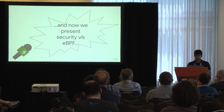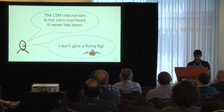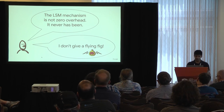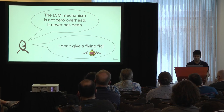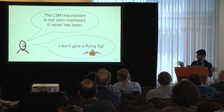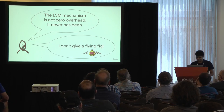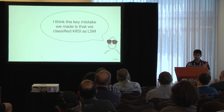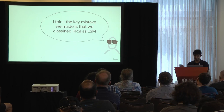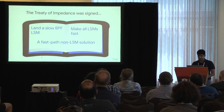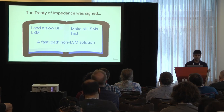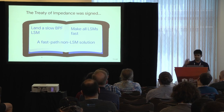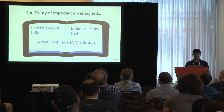Now the battle ensued between the security and the eBPF subsystems of the kernel. BPF likes performance — tracing has always been performant. But there were discussions on the mailing list, verbatim: 'The LSM mechanism has never been zero overhead and it shall never be.' The response: 'I don't give a flying fig.' Then Alexei got tired of all of this and said, 'I think the key mistake is that we called KRSI an LSM. We should have done everything in BPF.' But I argued there is value to that LSM surface.